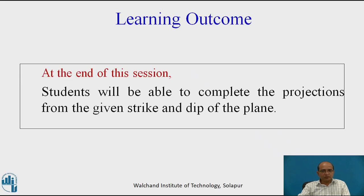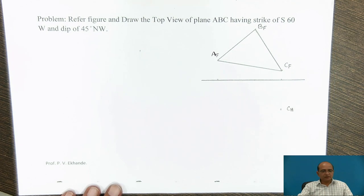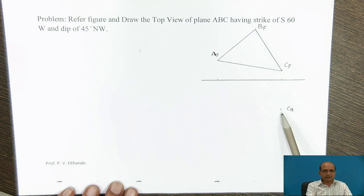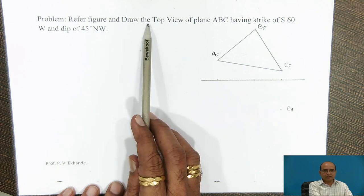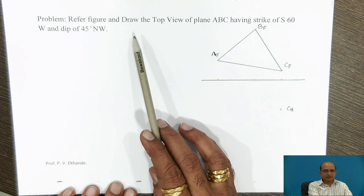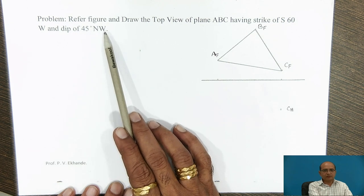Today we are going to observe the procedure for completion of the projections — either the top view or the front view of the plane — from the given strike and dip of the plane. The problem involves a triangle given in the front view, and the question is: refer to the figure and draw the top view of plane ABC, which has a strike of South 60 West and a dip angle of 40 degrees in the north-westerly direction.